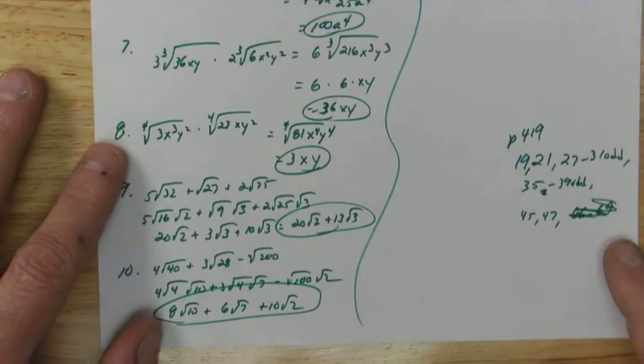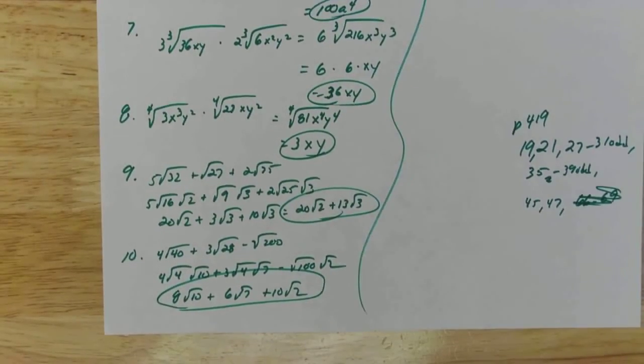You can pause this if you need. 9 and 10, simplifying each term, combining my like terms when I'm done.